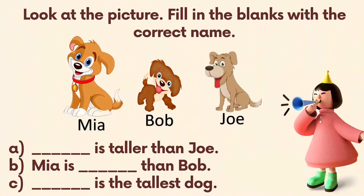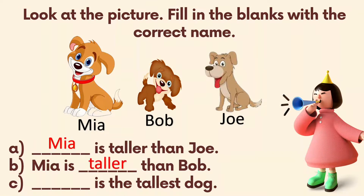Look at the picture and fill in the blanks with the correct name. These are dogs — Mia, Bob, and Joe. Blank is taller than Joe — it's Mia! Mia is blank than Bob — taller! And blank is the tallest dog — Mia is the tallest dog.